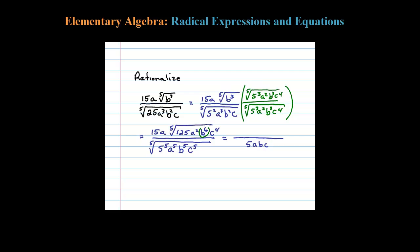I have b to the sixth, so the fifth root—5 goes into that 6 one time. I can pull a b out. That'll leave me with 15ab times the fifth root of 125 a squared. Now there's going to be one b remainder, C to the fourth.